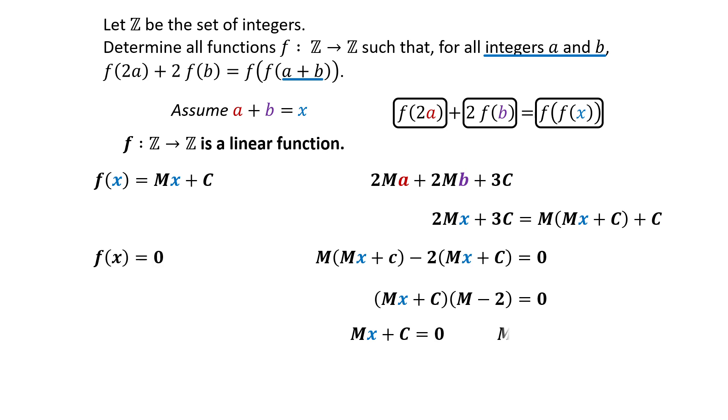Alternatively, M minus 2 equals 0, and we get M equals 2. And F of X is 2X plus C.